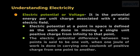The electric potential difference between two points is said to be 1 volt when 1 joule of work is done in carrying 1 coulomb of positive charge from one point to another.